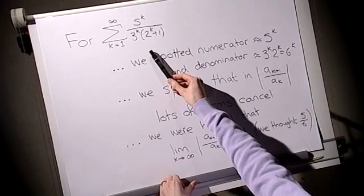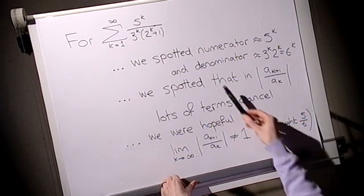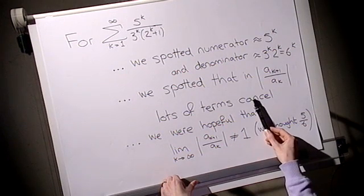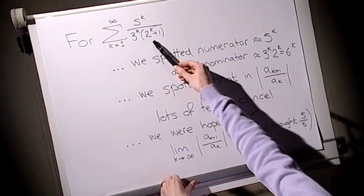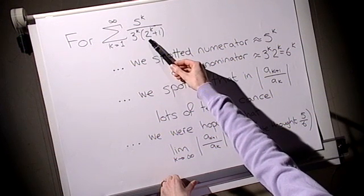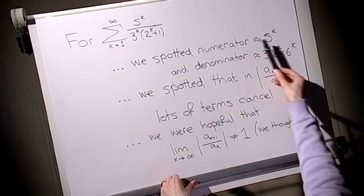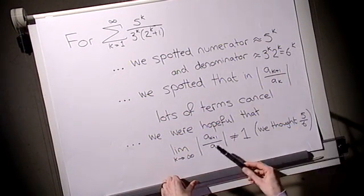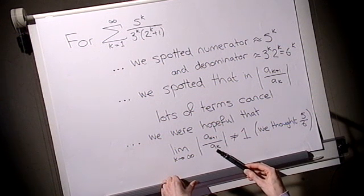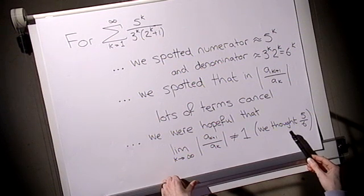In our second example, again we spotted that if we were to look at a_{k+1} over a_k, lots of the power is cancelled, and the top was about 5 to the k and the bottom is about 6 to the k plus 3 to the k, but that's quite small compared to 6 to the k. So the top is about 5 to the k, the bottom is about 6 to the k, and then we looked at this fraction and we hoped that the limit was not 1. We may have noticed in advance it was going to be 5 sixths.